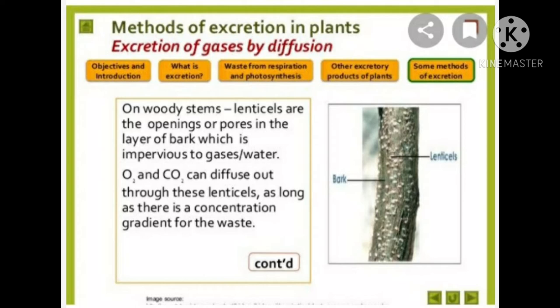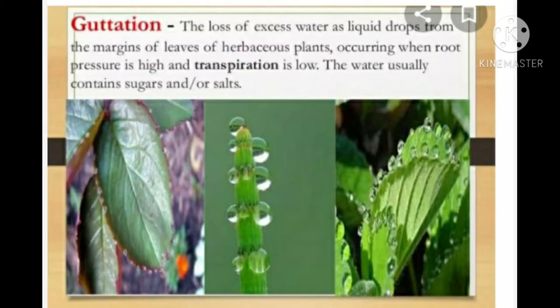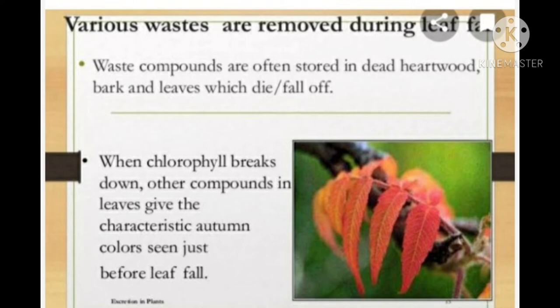Lenticels are lens-shaped cells present on the woody stem. Plants can get rid of excess water by processes like transpiration and guttation. Guttation means loss of excess water as liquid drops from the margins of leaves of herbaceous plants. This occurs when root pressure is high and transpiration is low, and the water usually contains sugars and salts.